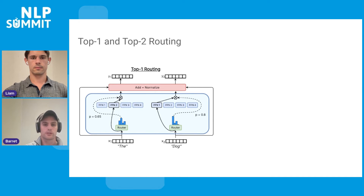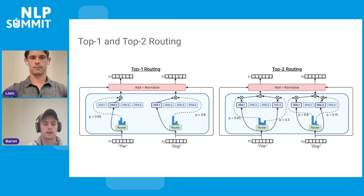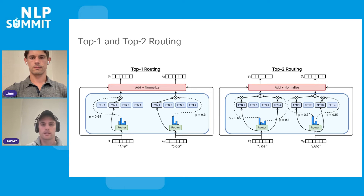Top-1 routing is the simplest form: the token comes in, there's a learned router matrix, and it's sent to the top-1 expert with the highest router score. The output is multiplied by the router score to ensure the whole process is differentiable. Top-2 routing is exactly what you'd expect — instead of each token being sent to the top-1 expert, it's sent to the top-2 experts.